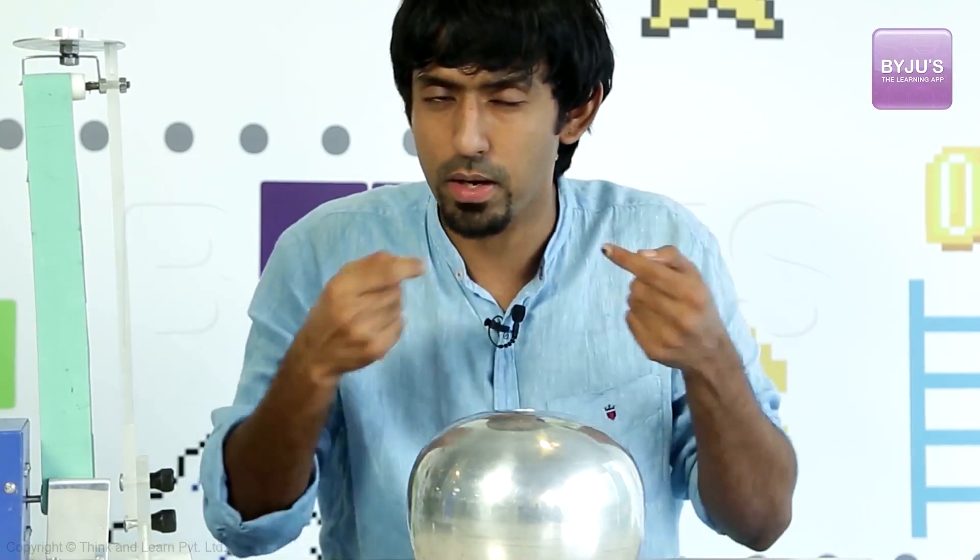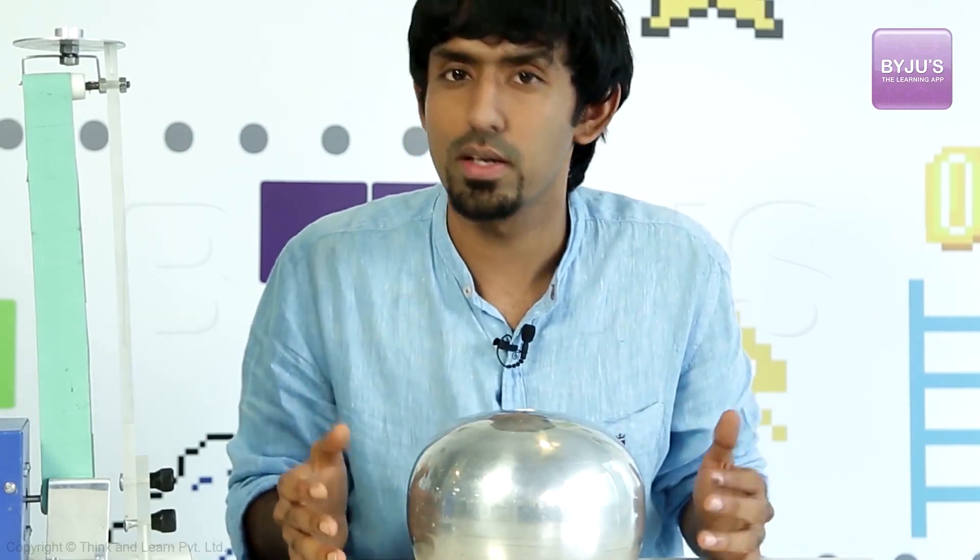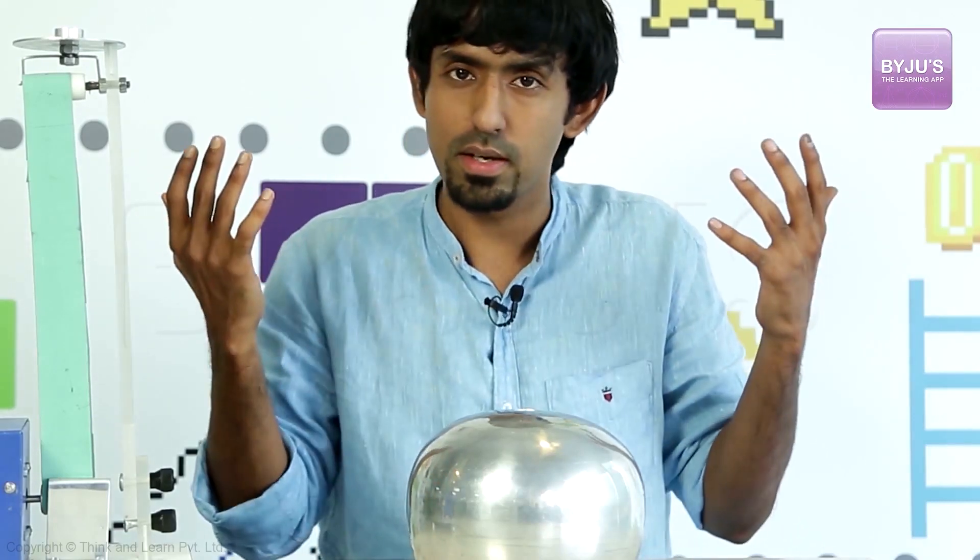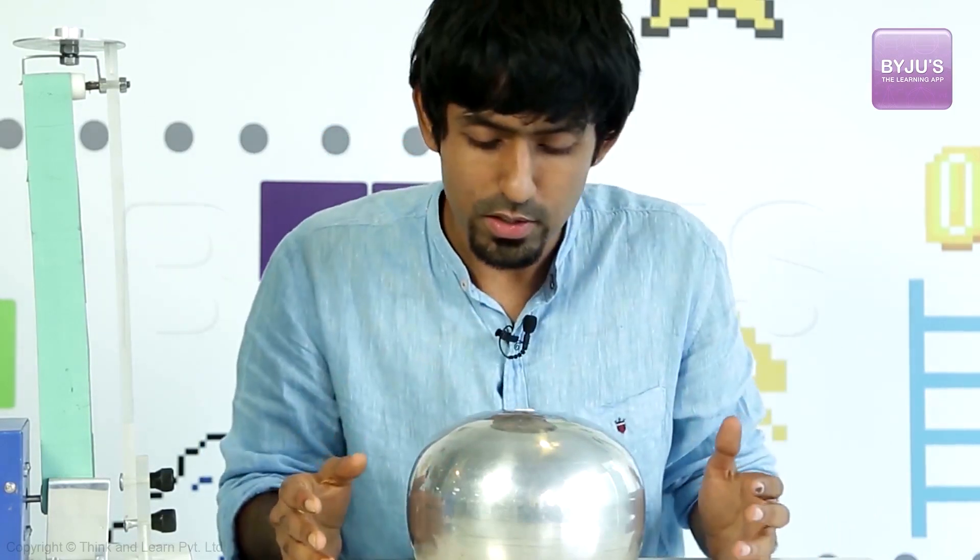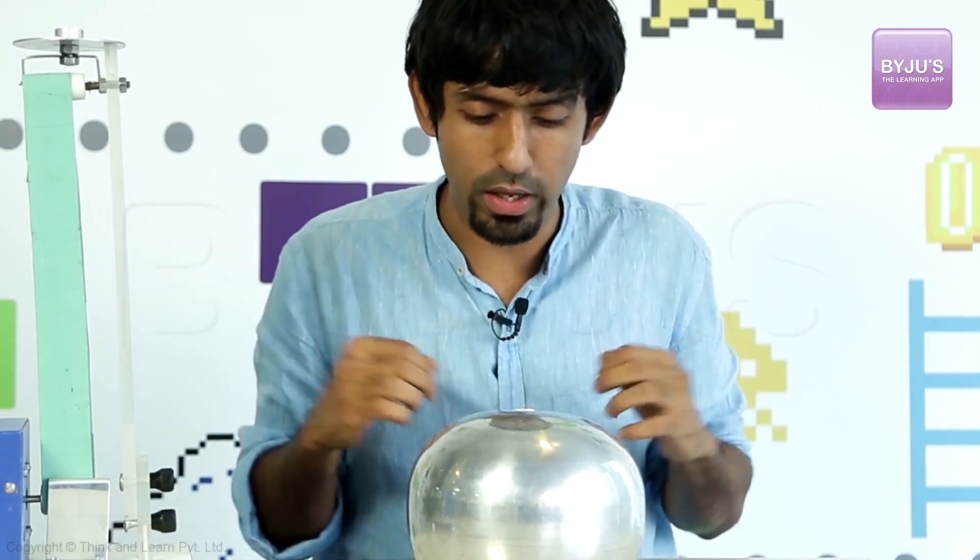Now whenever I'm saying electrons spilling outside, you should always imagine that the same argument would hold if I just had positive charges over here, and the opposite happened. I'm using electron spilling because it's easier to visualize. I could have just said charges, and you'll have to imagine the whole thing happening in the opposite direction. So for convenience, I'm imagining that I'm putting electrons onto this.